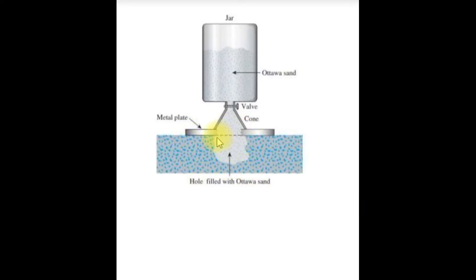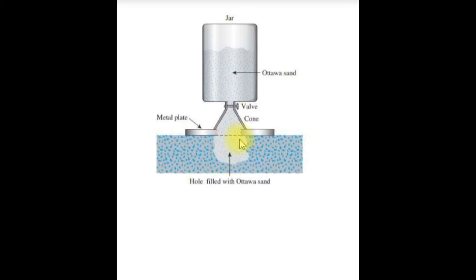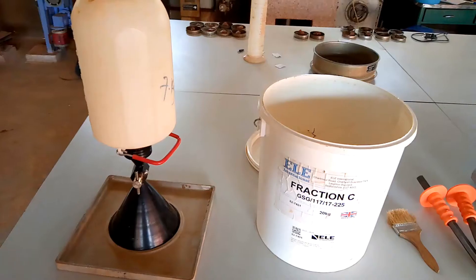In this method, a small cylindrical pit is excavated and the weight of the soil excavated from the pit is measured. Sand whose density is known — always called the calibrated sand or the Ottawa sand — is filled into the pit. By measuring the weight of the sand required to fill the pit and knowing its density, the volume of the pit is calculated. Knowing the weight of soil excavated from the pit and the volume of the pit, the density of the soil is also calculated.